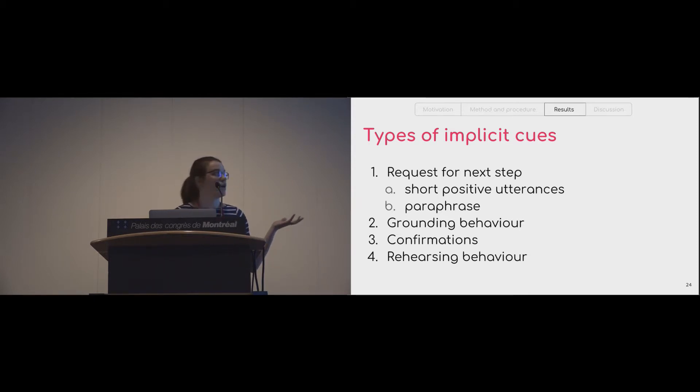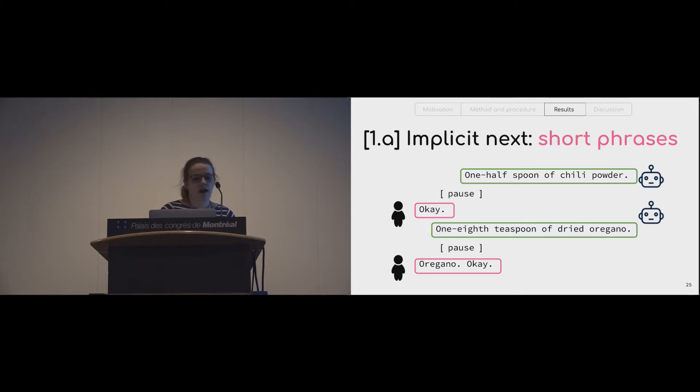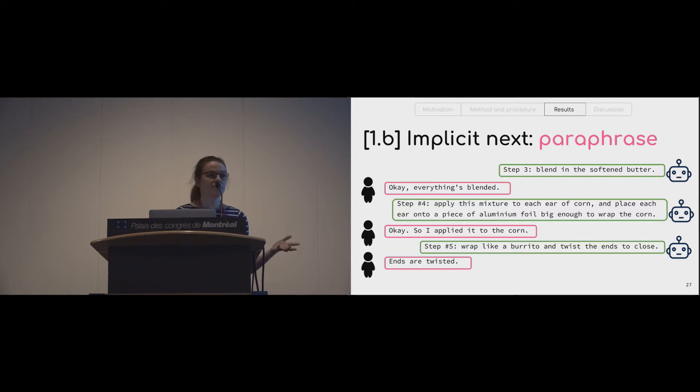First, the most popular intent that we observed was a request for a next step. These could be done using two different approaches. One approach is people would say short positive utterances like 'okay' or 'sounds good,' and the way it would go is the system would read out the response, the user would take some pause to complete the step, and then say 'okay,' signaling that they were ready to advance in the recipe. Alternatively, they could express the same intent by paraphrasing the previous system utterance. You can see that the user is responding 'okay, everything's blended,' by summarizing their actions. This is the same intent: I'm ready to move on.